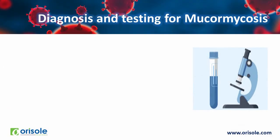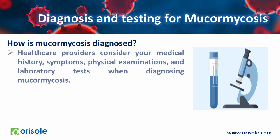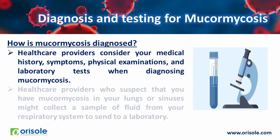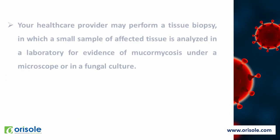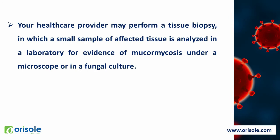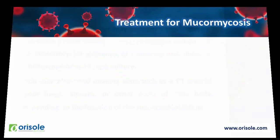How is mucormycosis diagnosed? Healthcare providers consider your medical history, symptoms, physical examinations and laboratory tests when diagnosing mucormycosis. They may collect a sample of fluid from your respiratory system to send to a laboratory. Your healthcare provider may also perform a tissue biopsy, in which a small sample of affected tissue is analyzed in a laboratory for evidence of mucormycosis under a microscope or in a fungal culture. You may also need imaging tests such as a CT scan of your lungs, sinuses or other parts of your body depending on the location of the suspected infection.